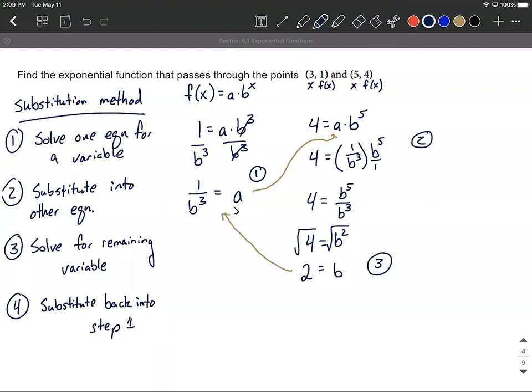We have 1 over 2 cubed is our a value. So 2 cubed works out to be 8. So our a value is 1/8. And that completes step number four.